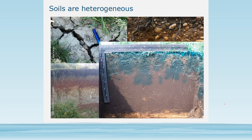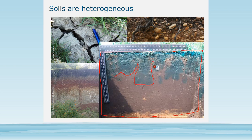One thing to notice is that soils are heterogeneous. You see this part of the soil profile — it looks very homogeneous. But when we pour the dye, you can see the infiltration front or wetting front and how heterogeneous it actually is.